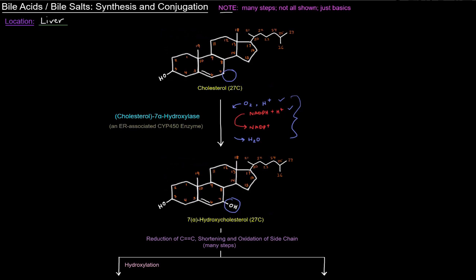This enzyme catalyzes the rate-limiting step of the pathway. Since it's the rate-limiting step, it is regulated. This enzyme is stimulated by excess cholesterol at the transcriptional level — the gene for that hydroxylase is transcribed more, so we end up with more of that enzyme. That makes sense because excess cholesterol is actually excreted as bile salts and bile acids in the feces, so it would make sense that a surplus of cholesterol would stimulate production of bile acids and bile salts to get rid of that excess cholesterol.